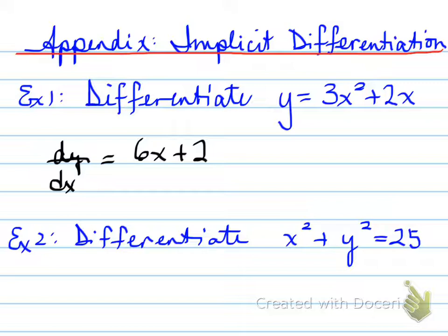This is known as a circle. You've seen this in grade 10. How do you find the derivative of a circle? Because a circle is a sketch that you could possibly have to draw, and you may need the slope of a tangent at a certain point with respect to a circle. To find this derivative, take the derivative of x squared, which is going to be 2x, and then the next part is going to be plus. Now you want to take the derivative of y squared with respect to x, but you're only given y squared.